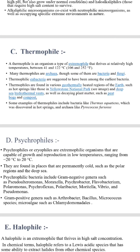Some examples of thermophiles include bacteria like Thermus aquaticus, discovered in hot springs, and archaea like Pyrococcus furiosus. Next are psychrophiles or cryophiles — extremophilic organisms capable of growth and reproduction in low temperatures ranging from minus 20 degrees Celsius to 20 degrees Celsius. They are found in permanently cold places such as polar regions and the deep sea. Psychrophilic bacteria include Gram-negative genera such as Pseudomonas, Moraxella, Cycrobacter, Flavobacterium, and Polaromonas, as well as Gram-positive genera such as Arthrobacter, Bacillus, Micrococcus species, and microalgae such as Chlamydomonas.